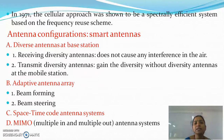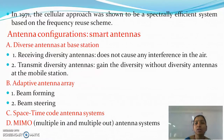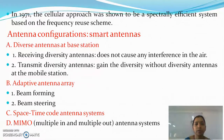In 1971, the cellular approach was shown to be a spectrally efficient system based on the frequency reuse scheme. In the cellular scheme, the same frequency can be utilized multiple times by maintaining a certain distance between cells, which automatically increases the capacity of the cellular system.